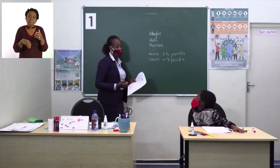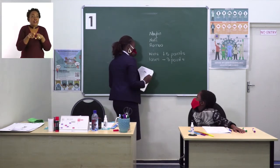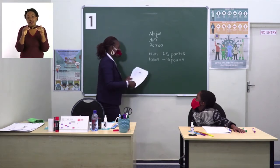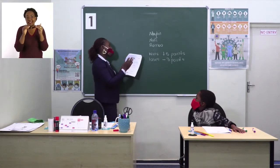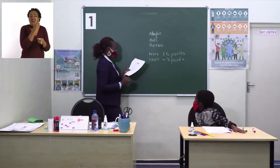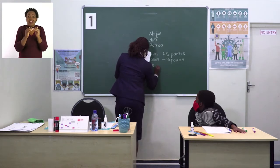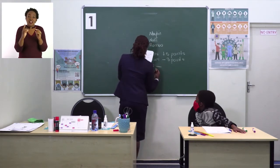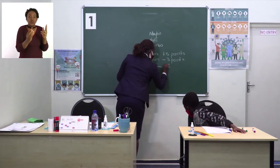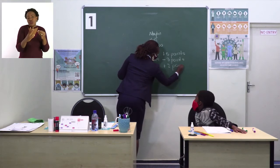If it's a tie — a tie means they have the same score, maybe one-one or two-two — each player gets two points, so it's plus two points.